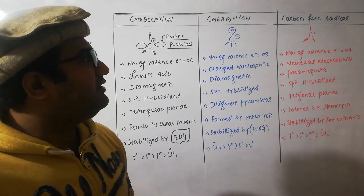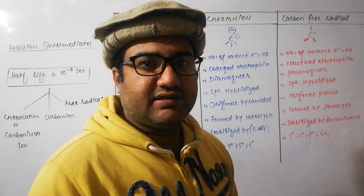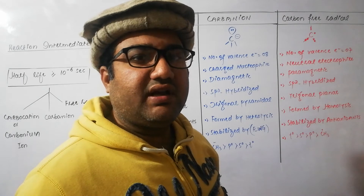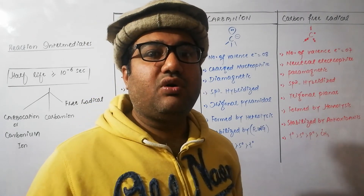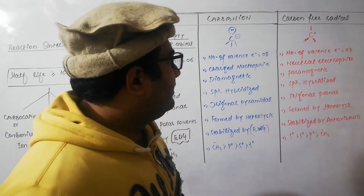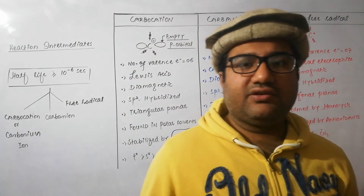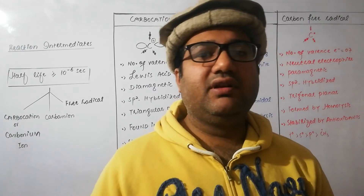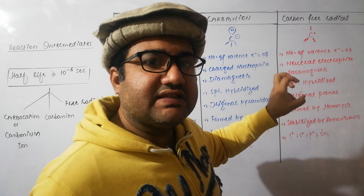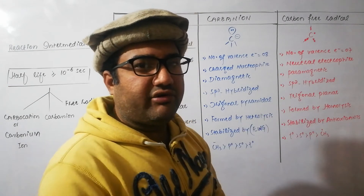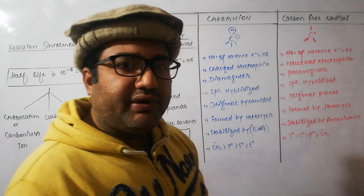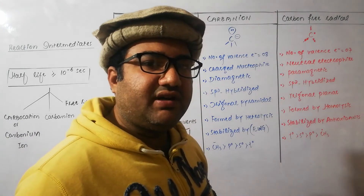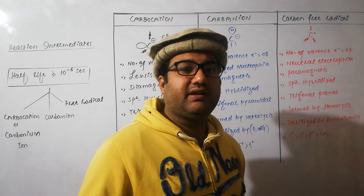The last one is the carbon free radical. A carbon free radical is a carbon having seven electrons in its outermost shell, out of which three are bond pairs and one is an unpaired or unshared electron. So this carbon has an odd number of electrons in its valence shell, that is seven. Because it has one unpaired electron, it will always be looking for a species to share electrons with, behaving like a neutral electrophile. As one electron is unpaired, it will be paramagnetic in nature. It is sp2 hybridized and therefore trigonal planar. It is formed by homolytic cleavage or homolysis.